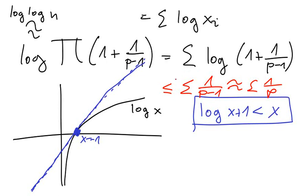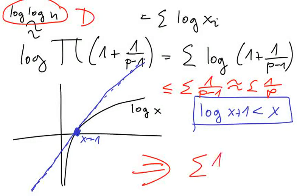So we know that this thing here already diverges. And this thing is growing as logarithm of logarithm of n, so it diverges. And we know that it is dominated by sum 1 over p, meaning that sum 1 over p diverges.